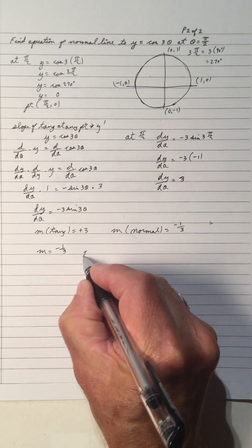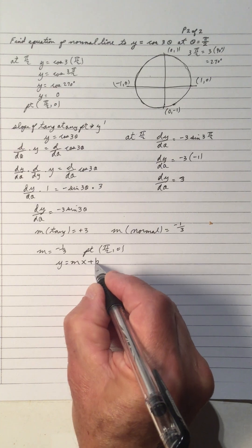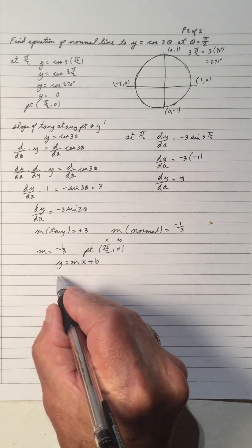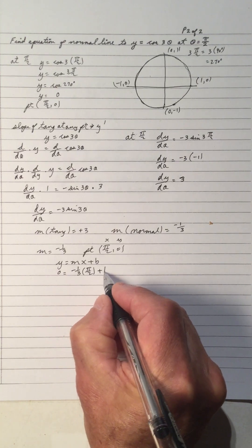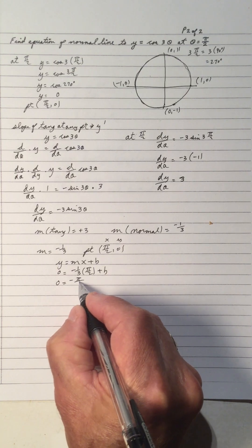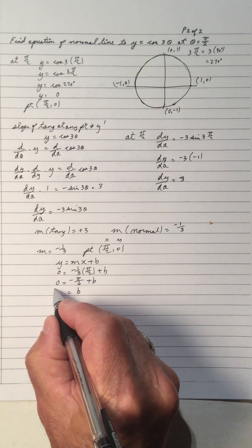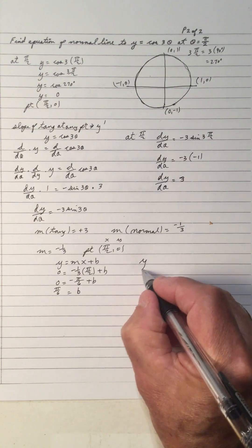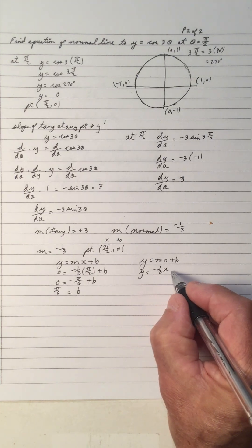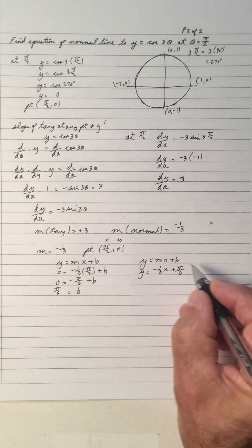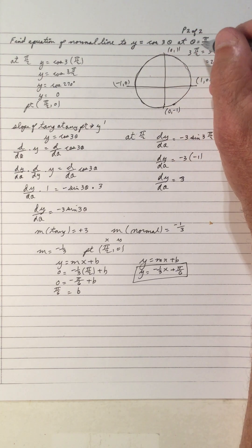Now we have the slope of the normal, which is negative 1/3, and the point is (pi over 2, 0). Substituting into y equals mx plus b: y is 0, slope is negative 1/3, x is pi over 2. So 0 equals negative pi over 6 plus b, which gives b equals pi over 6. Therefore the equation of the normal is y equals negative 1/3 times x plus pi over 6. That's the equation of the normal to y equals cos 3 theta at theta equals pi over 2.